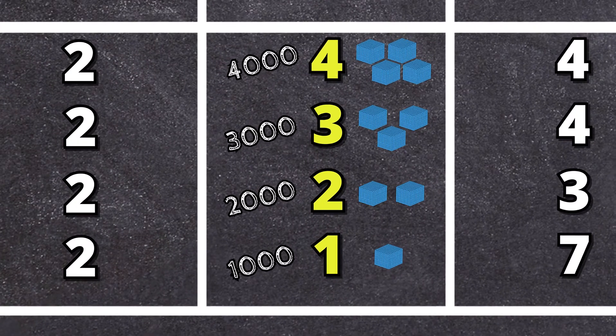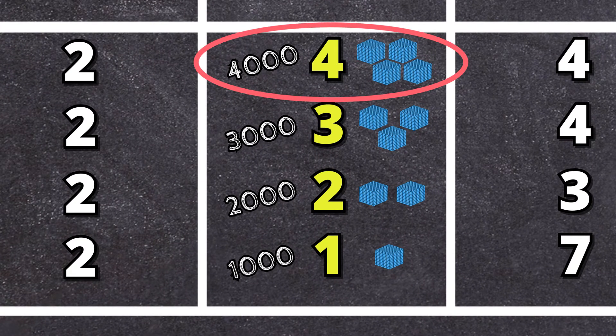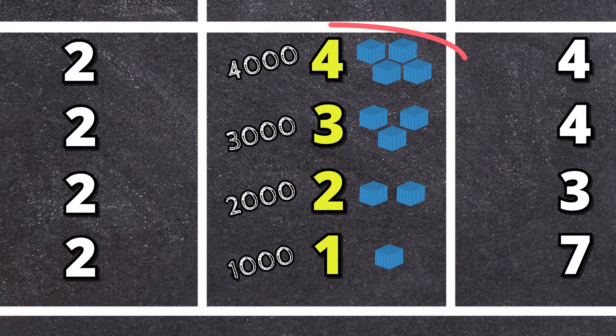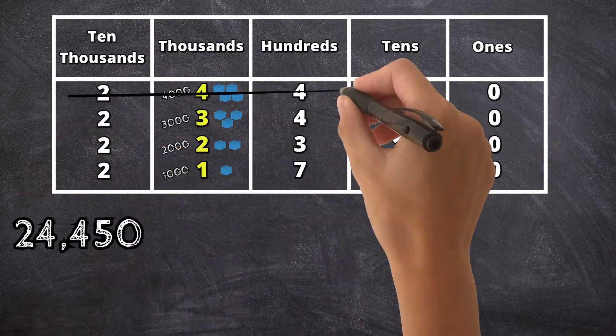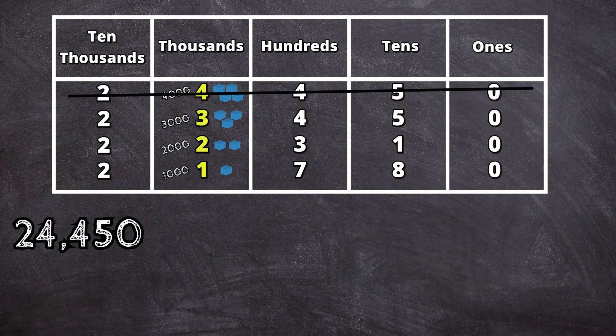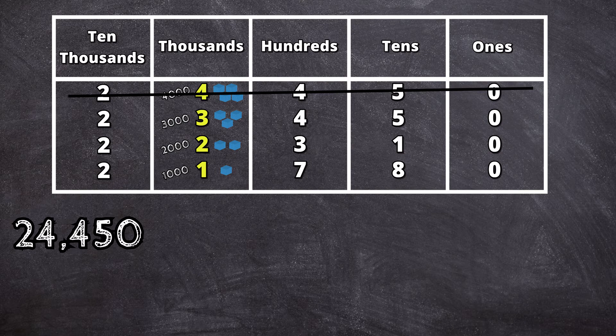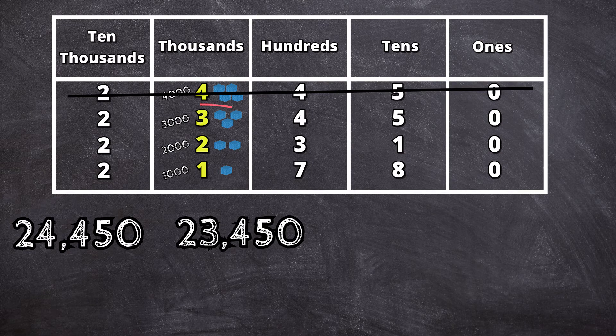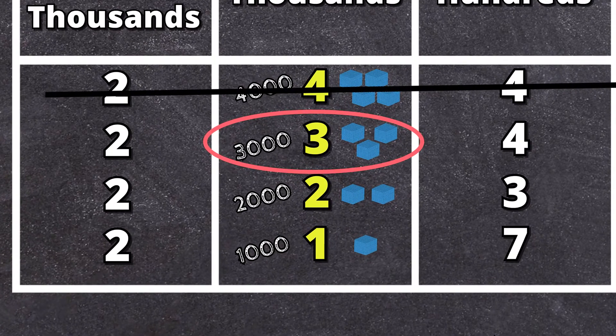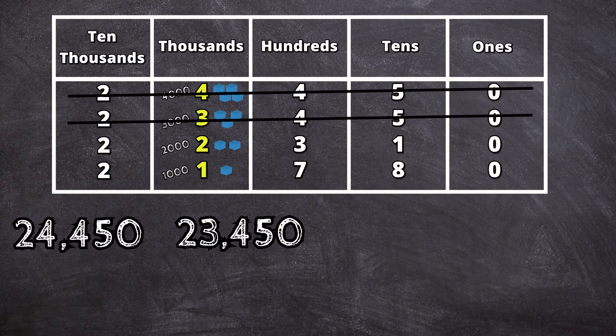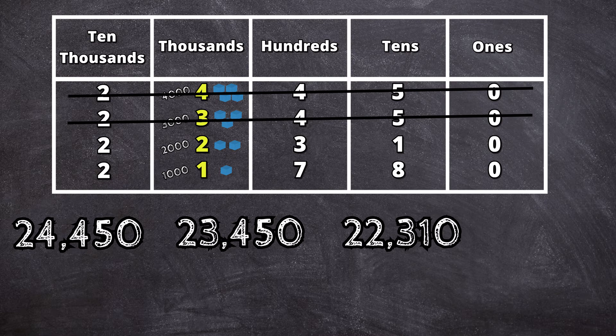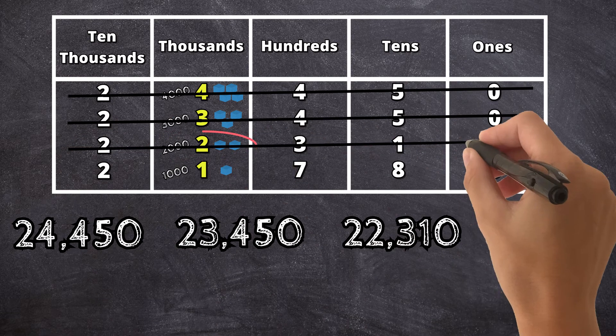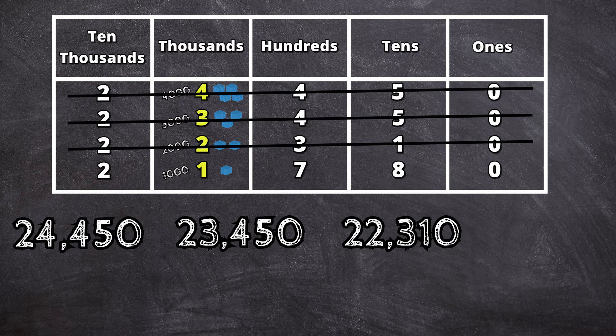Since 4,000 is greater than all other values in the 1,000th place, the number 24,450 has the greatest value. Our next number would be 23,450 since 3,000 is greater than 1,000 and 2,000. Then it would be the number 22,310 because 2,000 is greater than 1,000. And our last number would be 21,780.